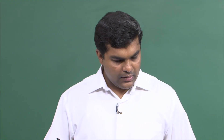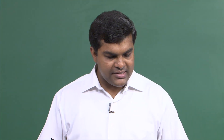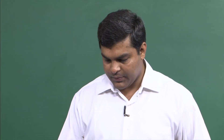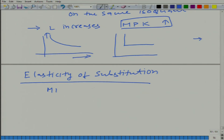What we have is the elasticity of substitution. Let us look at MRTS — what is the slope of the isoquant — and this is MPL divided by MPK.